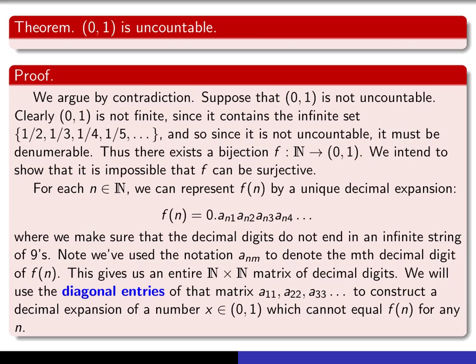But it gives us an infinite matrix, an n-by-n matrix of decimal digits. And what we're going to do is we're going to focus on the diagonal entries of that infinite matrix, namely a₁₁, a₂₂, a₃₃, etc. And we're going to use those decimal digits to construct a decimal expansion of some number that couldn't possibly be any of these.